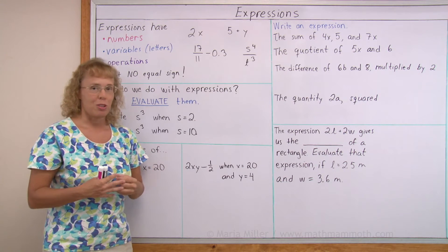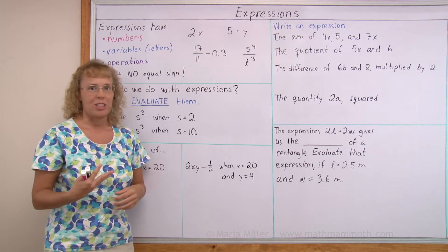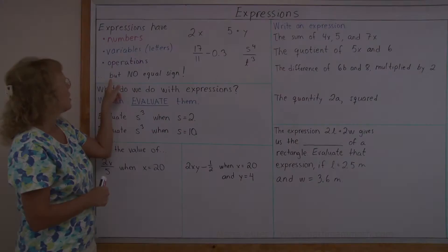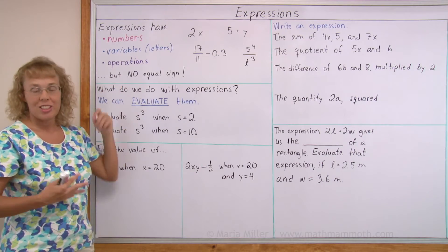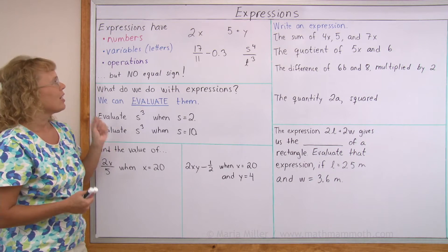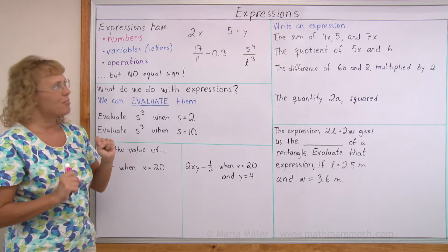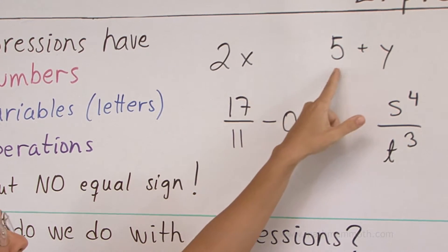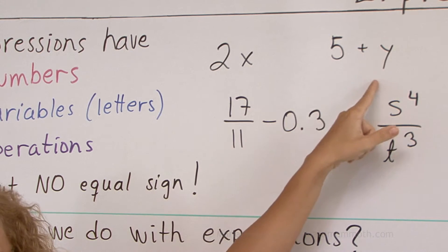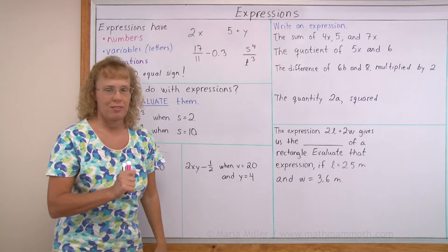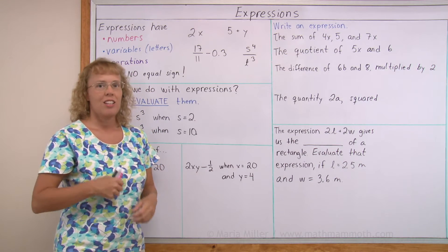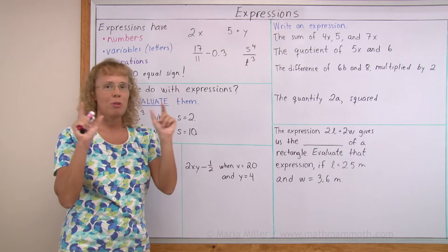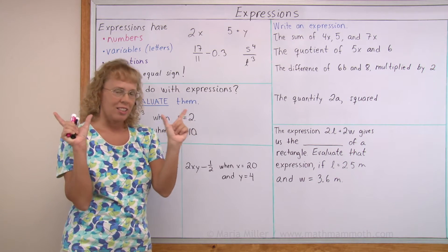A single number would also be an expression — for example, 5. Or a single letter. An expression does not have an equal sign. Now, if it did — for example, if I had 2x equals 5 plus y — then it would be an equation. An equation always has an equal sign, and on both sides there is an expression.